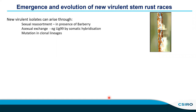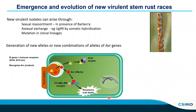We're interested in avirulence genes because we're interested in how new virulent stem rust races can emerge and evolve. There are a number of processes important for this: one is sexual reassortment, which requires the presence of the alternate host. Asexual exchange is also important — Melania Figueroa will talk more about the emergence of UG99 by somatic hybridization — and another common mechanism is mutations that occur in clonal lineages that give rise to virulence. What's common between all these processes is they result in the generation of either new alleles or new combinations of alleles of avirulence genes.